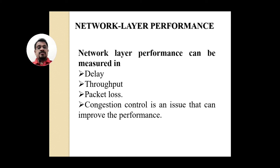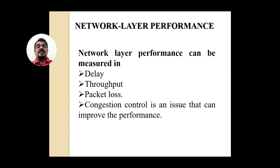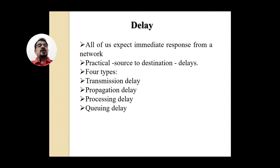If you effectively write a congestion control algorithm, you can easily improve network performance. If any point in the network experiences congestion, the routing protocol has to take an alternative route so that packet loss can be avoided. If packet loss is avoided, retransmission is avoided, and network resources can be utilized for real-time data transfer instead. Now let's look at each factor one by one, starting with delay.